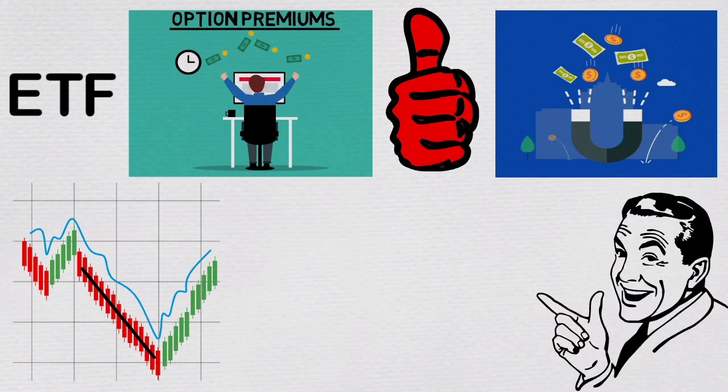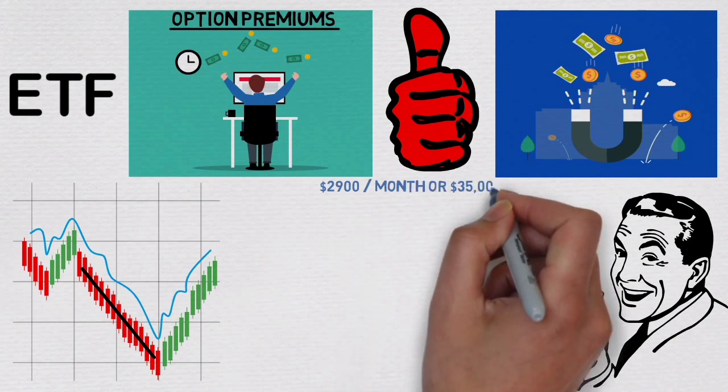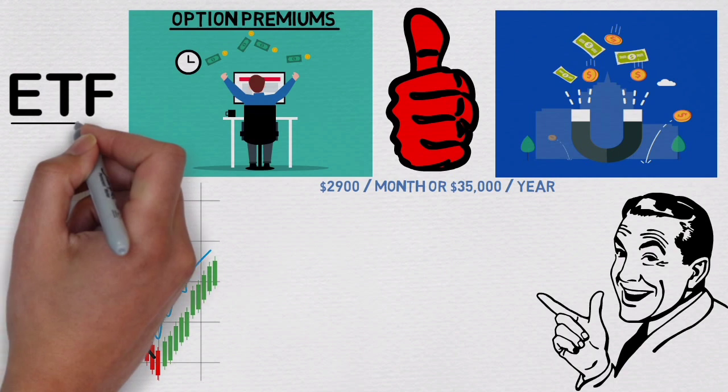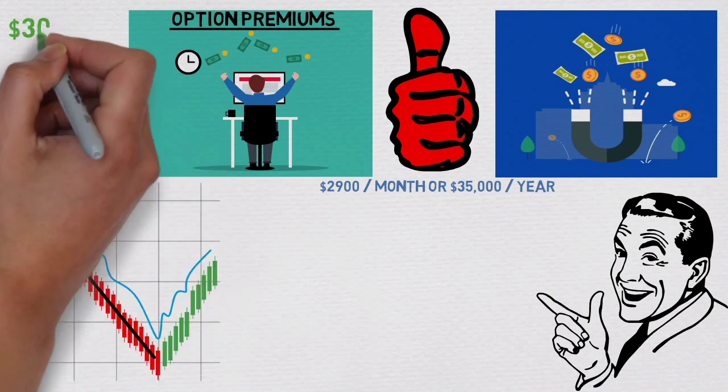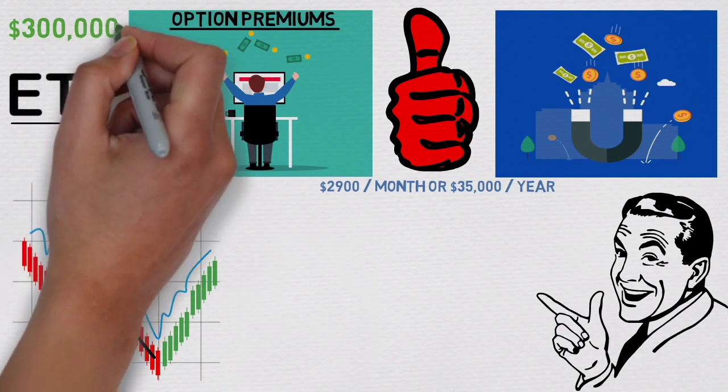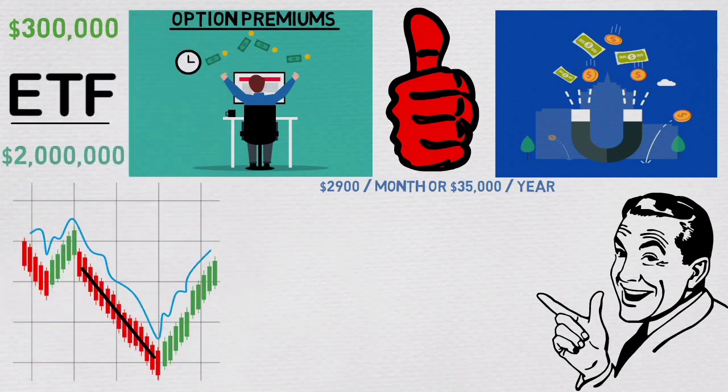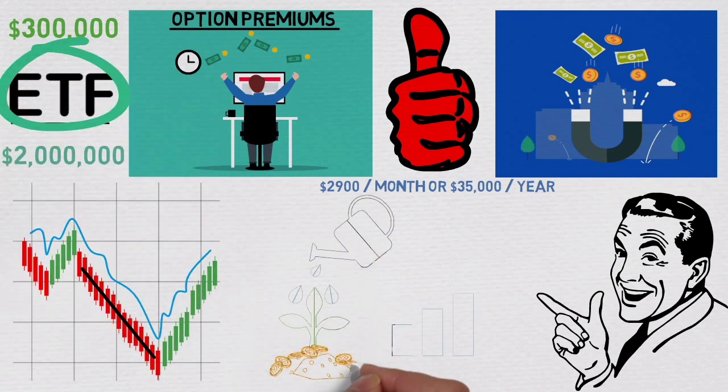let's apply this to real-life example. If you aim to earn $2,900 per month or $35,000 per year using covered call ETF, using current average yield investor would need around $300,000 invested, comparing to traditional dividend stocks where you would need around $2,000,000 invested to reach similar results,